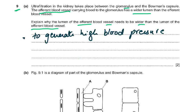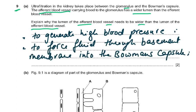When the efferent lumen is smaller, a back pressure is created — just like when you press a pipe while watering plants, the water coming in at a larger volume exits at a smaller volume with a lot of pressure. This generates high blood pressure to force fluid through the basement membrane into the Bowman's capsule.